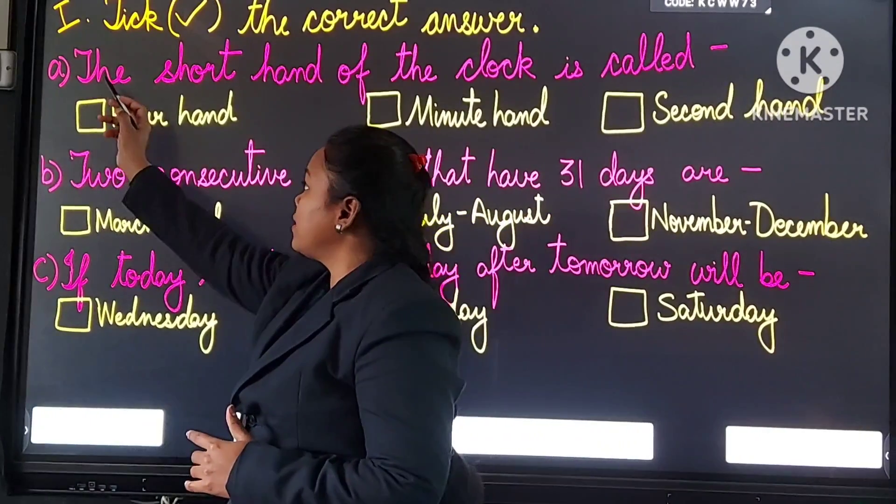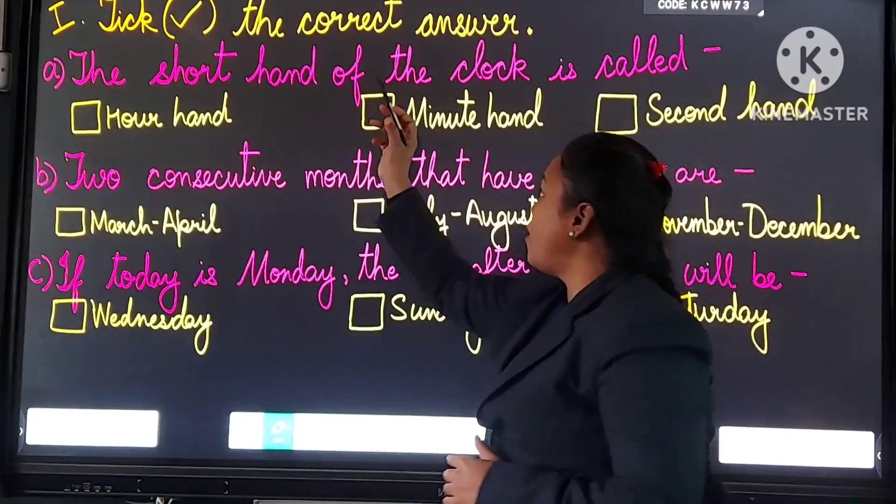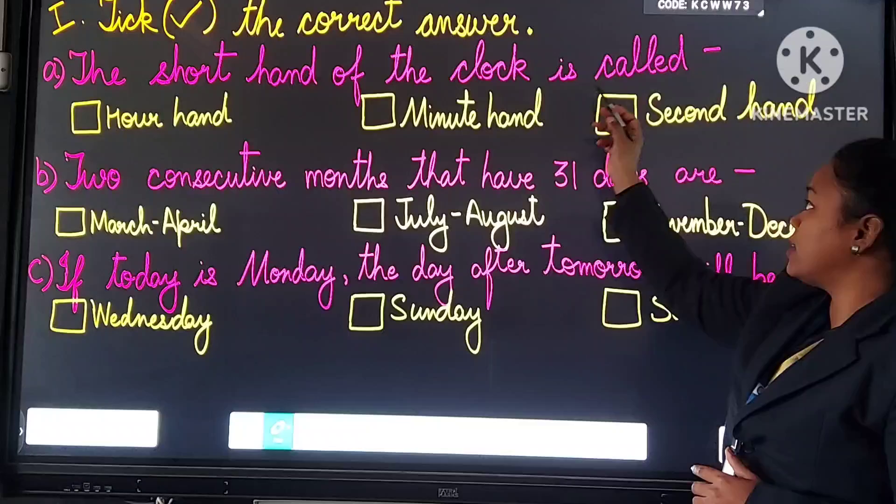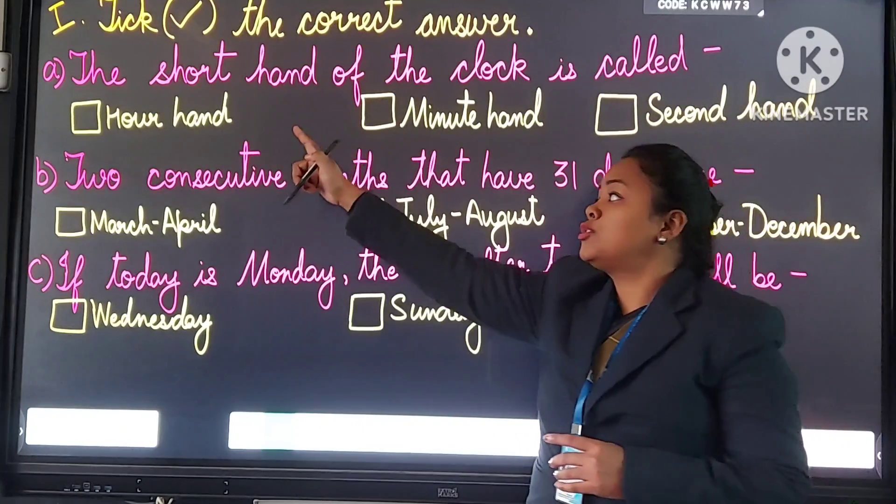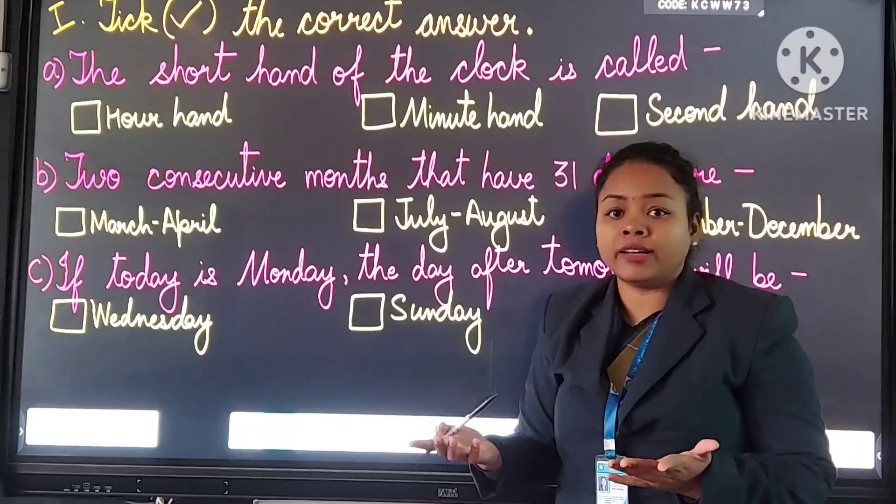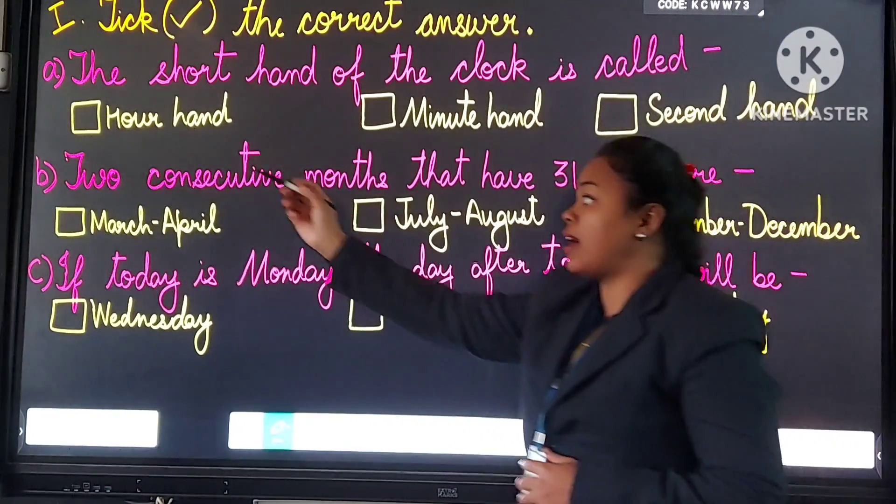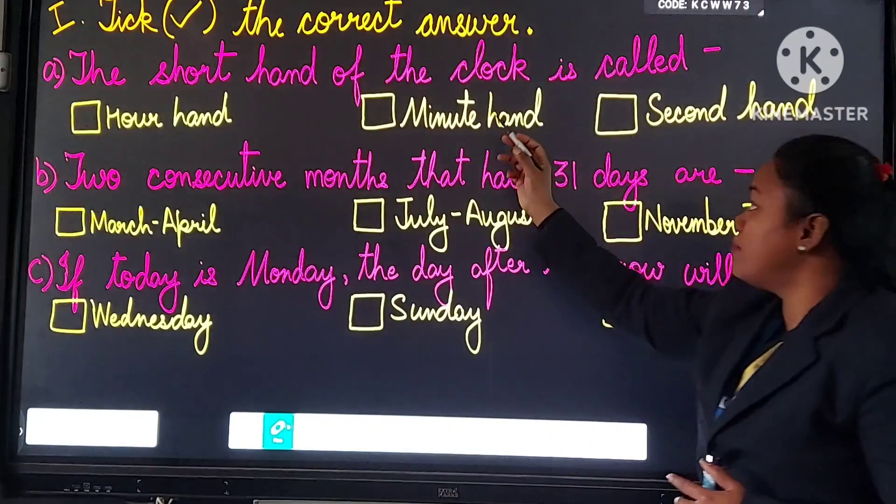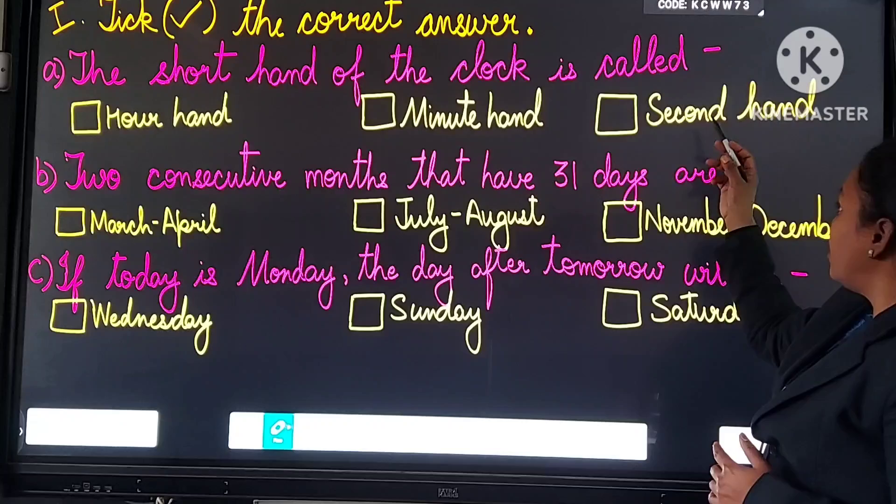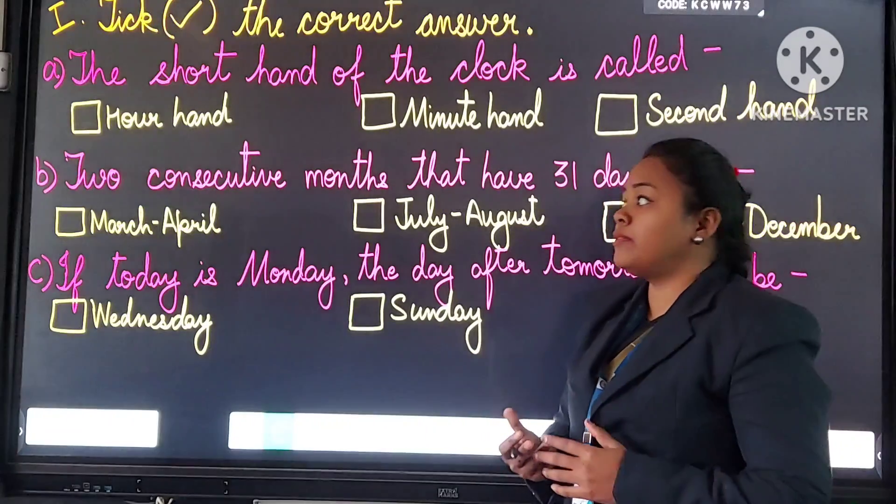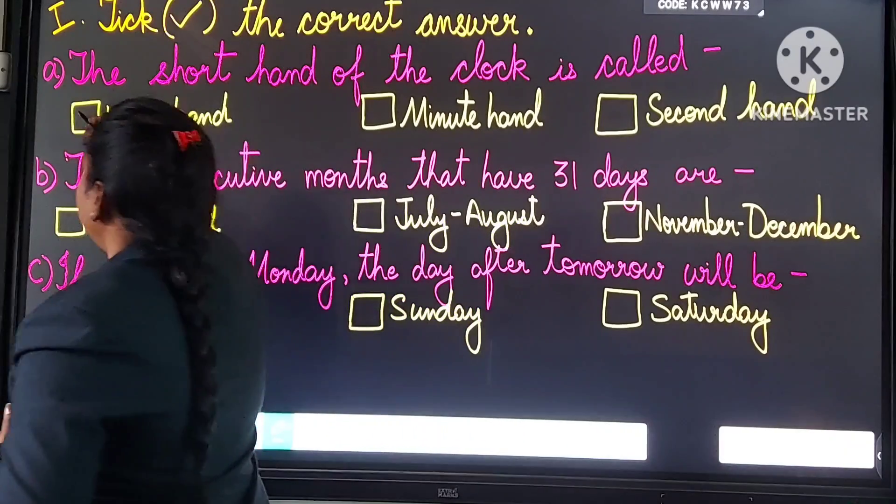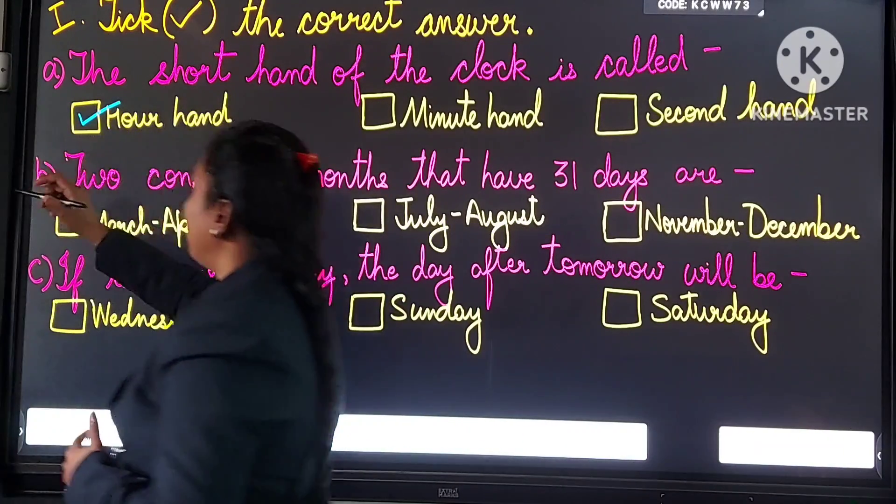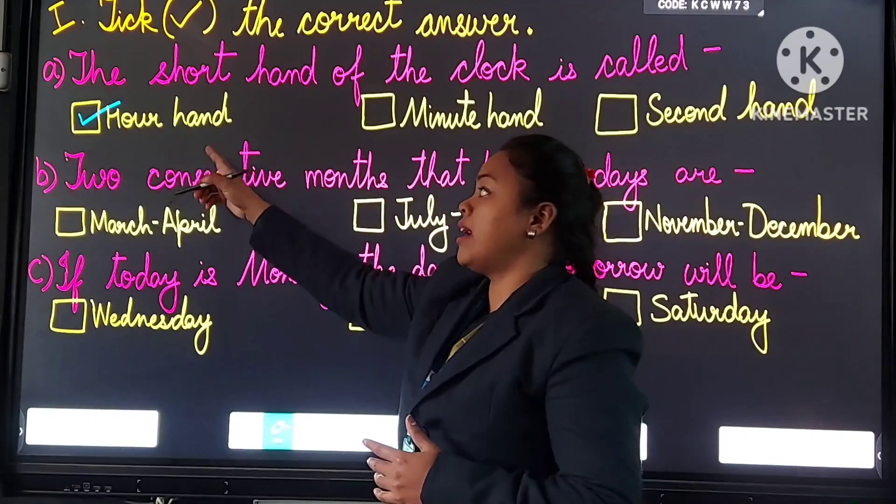Here is the first question. The short hand of the clock is called. A clock ka short hand kya kehlata hai? Options are hour hand, minute hand, or second hand. Answer will be hour hand. You will tick here. Answer: hour hand.